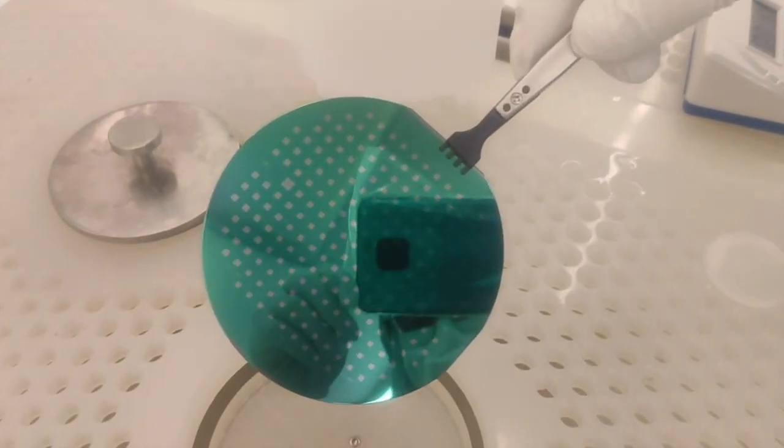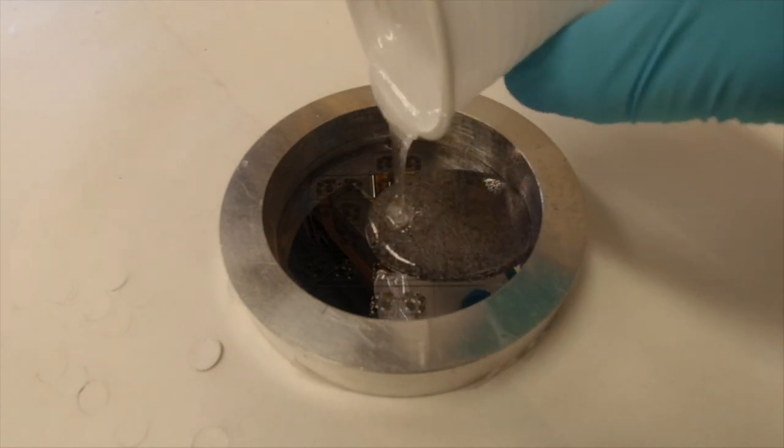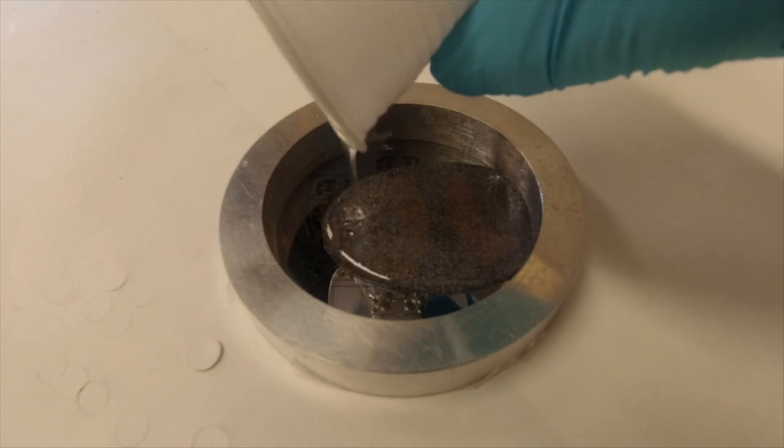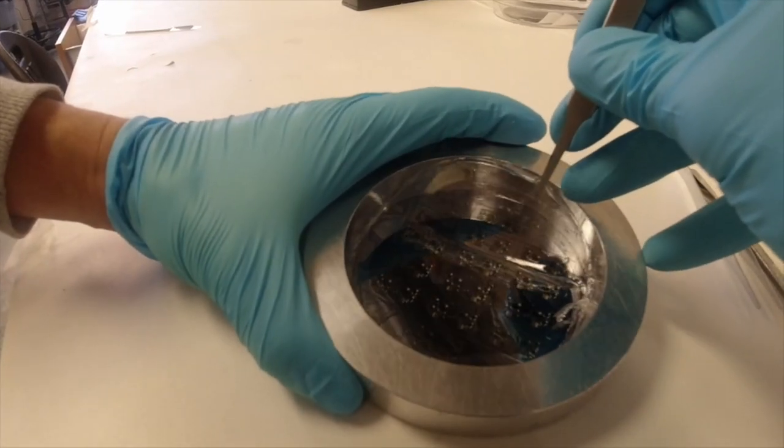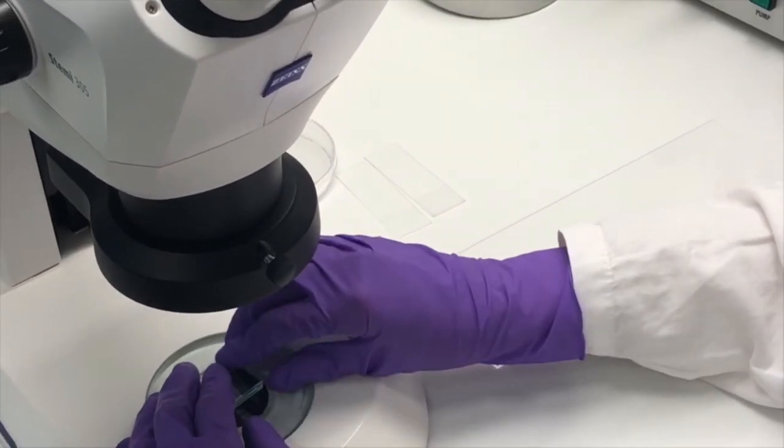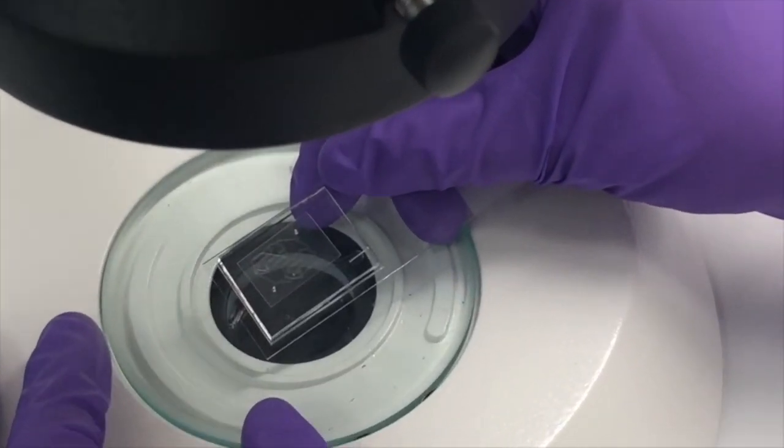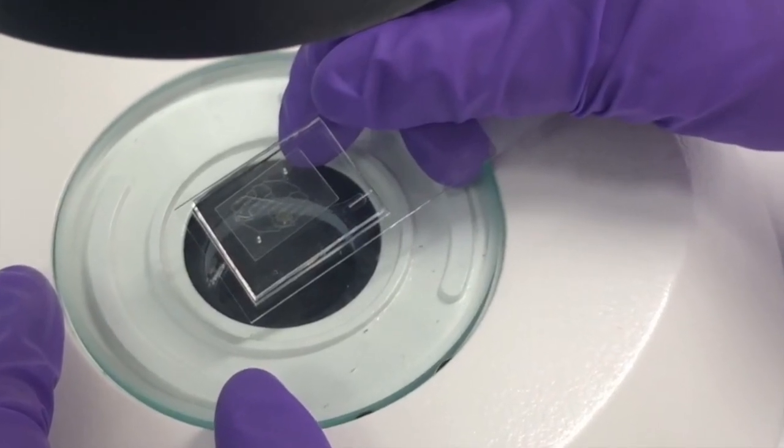This plastic mask can then either be used as a mold, where for example PDMS can be poured into, or to directly etch into the material, like silicon or glass. After the PDMS has been cured, it can be peeled off the mold, and after activating the surface with oxygen plasma, it can be bonded to a glass bottom. The channels that were molded into the PDMS are now closed off by the glass.